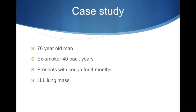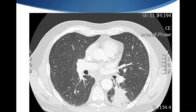Here's a case study of a 76-year-old man who was an ex-smoker of 40 pack years and presented with four months of cough. On the CT scan there's a left lower lobe lung mass. Here's the CT.